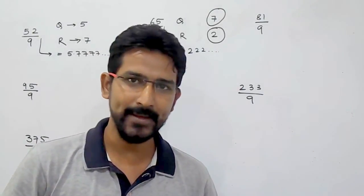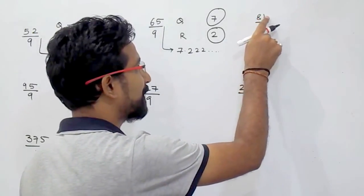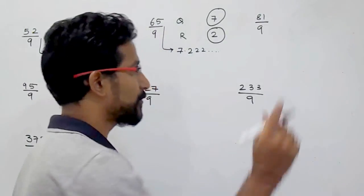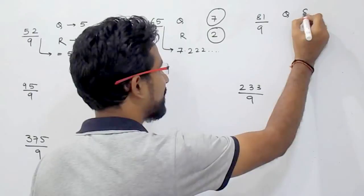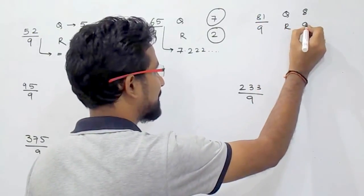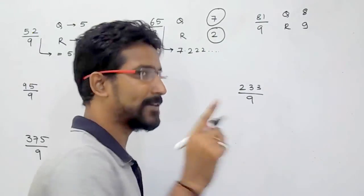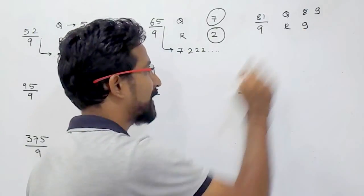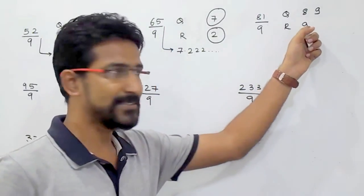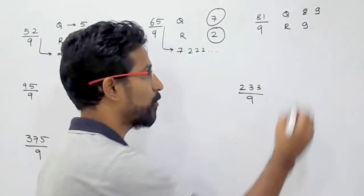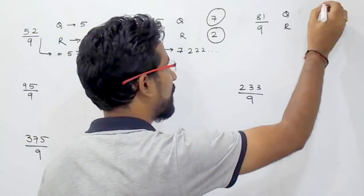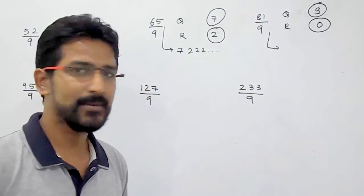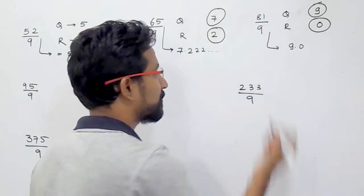81 divided by 9: 8 plus 1 is 9. So when it is equal to or greater than 9, what you have to do is first write 8 for the quotient. For the remainder, 8 plus 1 is 9. Since it is equal to 9, increase the quotient by 1 — it becomes 9 — and subtract 9 from the remainder: 9 minus 9 is 0. So the quotient is 9, remainder is 0, and we all know 81 is exactly divisible by 9. The answer is 9.